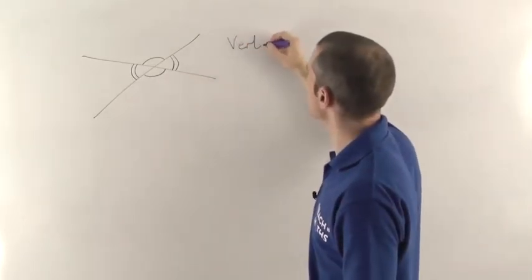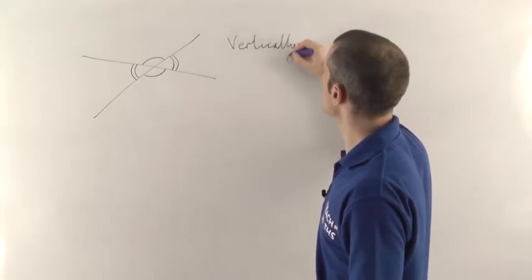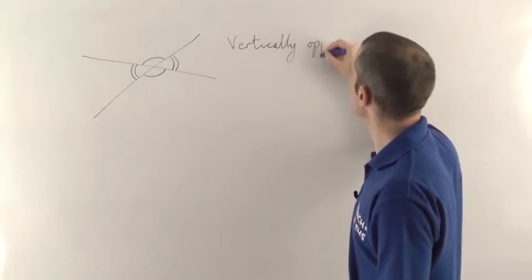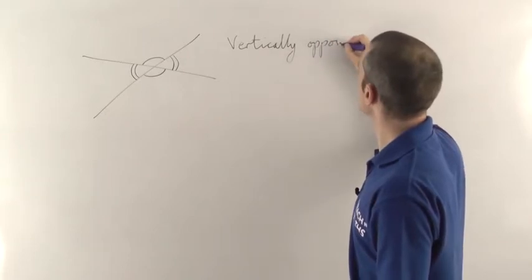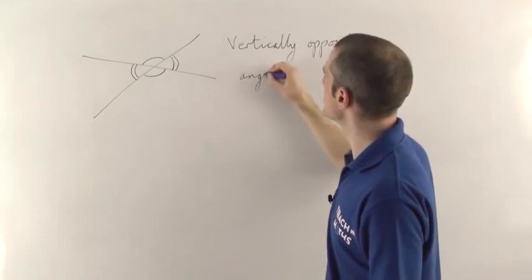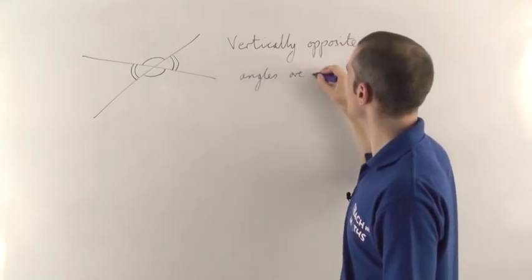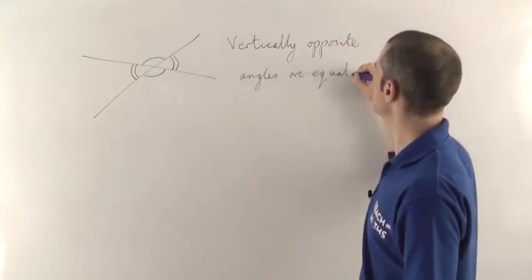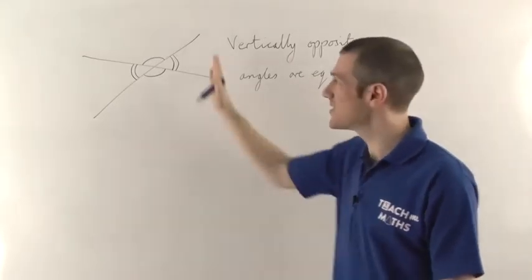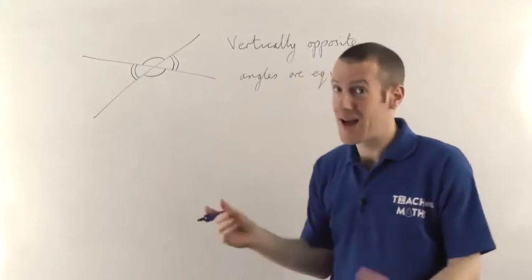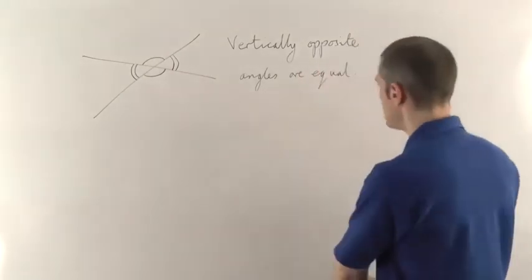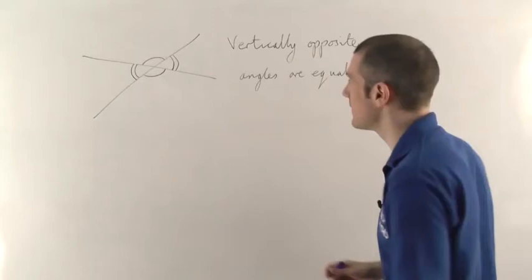So vertically opposite angles are equal. Let's write that down so you can see how it's spelled: vertically — as in vertically straight up — opposite, because they're across from one another, and those angles are equal. That's quite an important fact to do with angles. This situation where you have two lines that cross happens a lot, so be aware of that one. That's our first angle fact. The next set of angle facts are all to do with parallel lines.